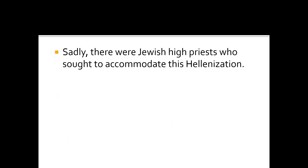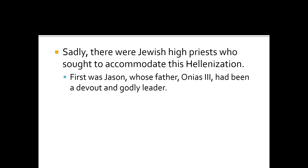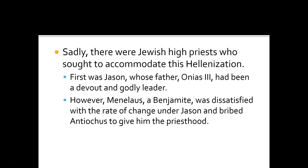Sadly, there were Jewish high priests who sought to accommodate Hellenization. There was a man called Jason — actually his name was Joshua, but he took a Greek name. His father Onias III had been a devout and godly leader, but Jason was appointed in his place and tried to bring in Hellenization — encouraging the Greek language and Greek culture. He built a gymnasium to teach people in Jerusalem how to conduct themselves like a Greek. But a man called Menelaus, who was a Benjamite, was dissatisfied with the rate of change under Jason and bribed Antiochus IV to give him the priesthood instead. Even though he was not from the Levitical tribe, he paid money to Antiochus and became priest and ruler over Jerusalem.